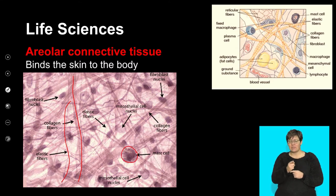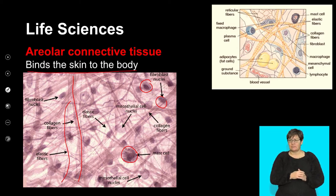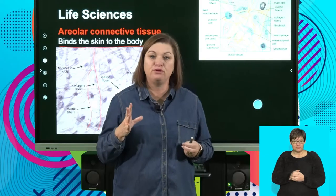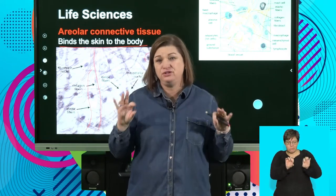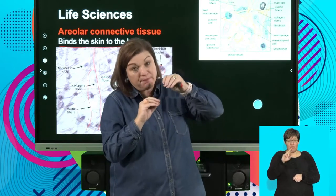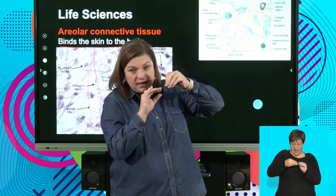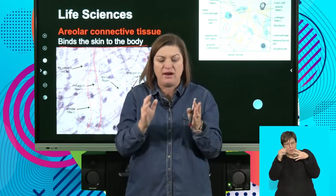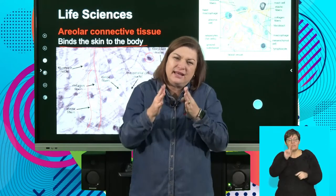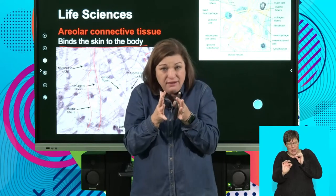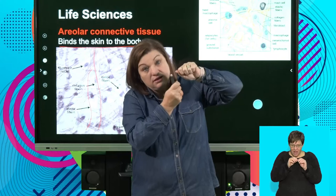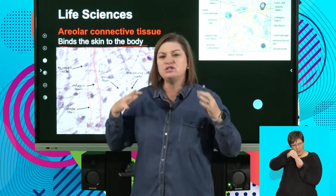This loose connective tissue binds the skin to the body and binds all the different organs. Think of a thin, see-through white layer underneath the skin of a raw chicken wing — that's areolar connective tissue. It's called loose connective tissue because the fibers are loosely arranged. If you look at the matrix, you can see a lot of it. This is the most abundant tissue in the body.